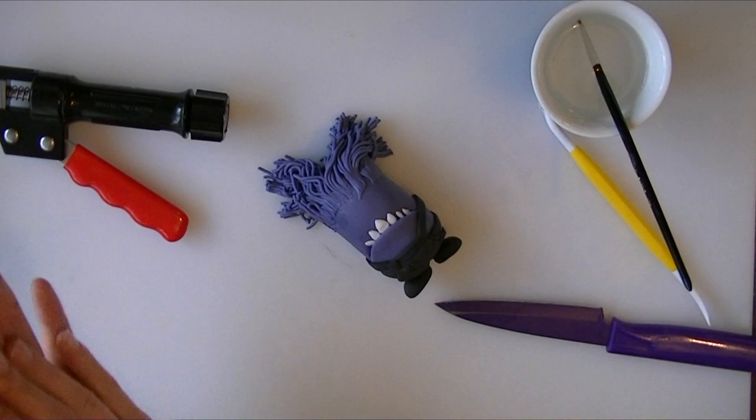Once you have got your hair where you want it, you can then start adding the band that goes around his eyes. We are rolling out some black and we are just going to cut a thin strip to go around his head.